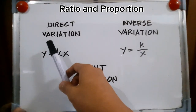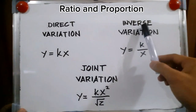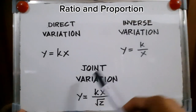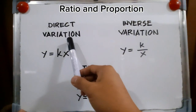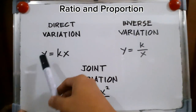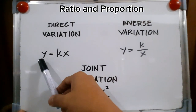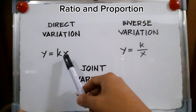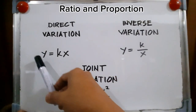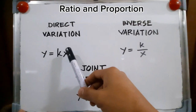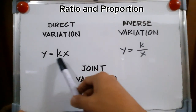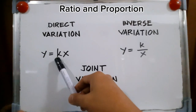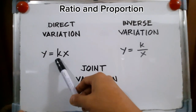In ratio and proportion, we'll be discussing direct variation, inverse variation, and joint variation. In direct variation, two variables are directly related. We have Y is directly proportional to X. If Y goes up, then X goes up. If Y goes down, then X goes down, because they are directly proportional. K is the constant of variation or the constant of proportion.